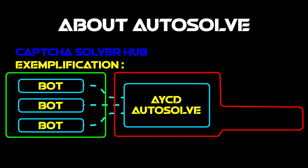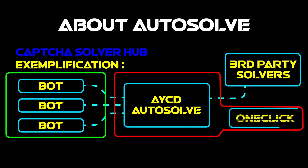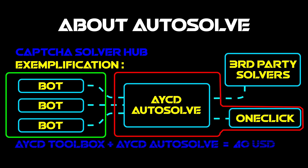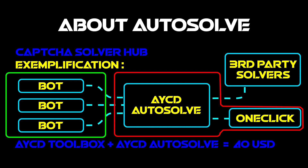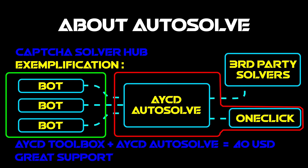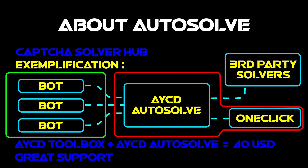In Autosolve you can use several third-party captcha solvers, but you can also solve the captchas manually. If you want to access Autosolve, you need to buy AYCD Toolbox and AYCD Autosolve. Together they cost $40 per month. AYCD has one of the greatest online guides I've ever seen, so definitely go check out their page — link in the description. They also have a very good Discord server, which you can access when you buy AYCD Toolbox.